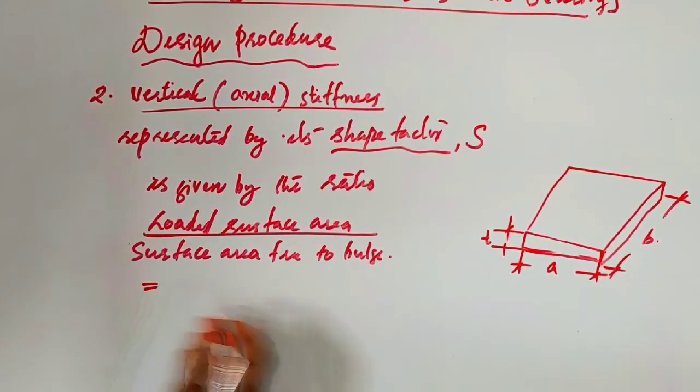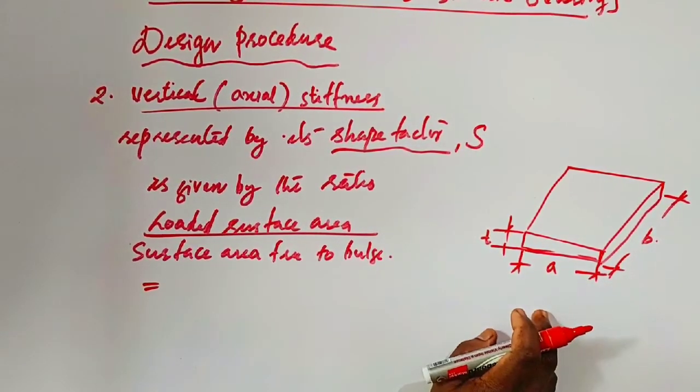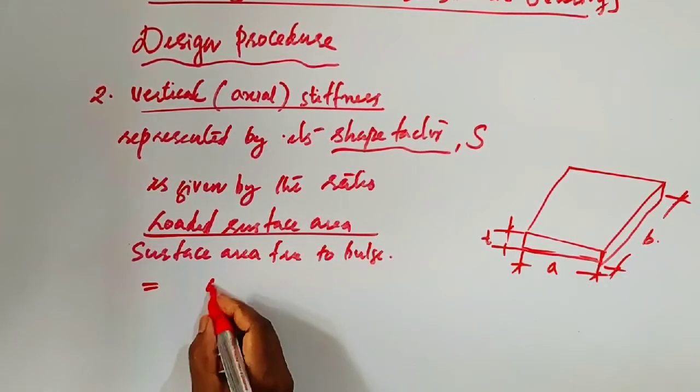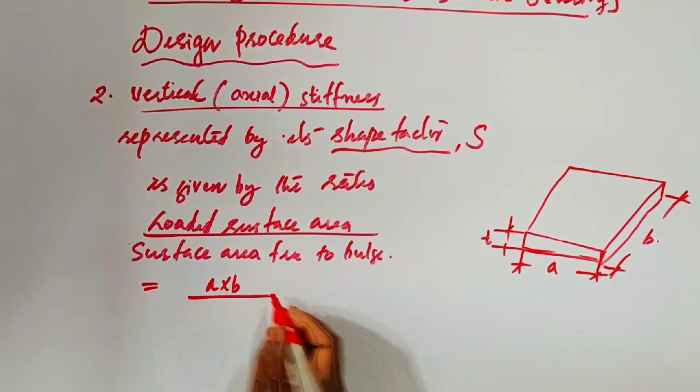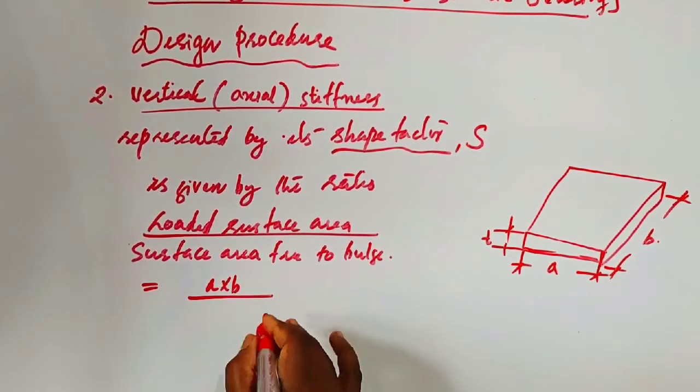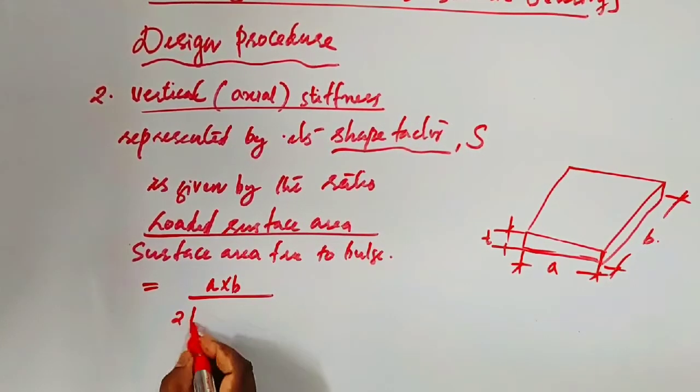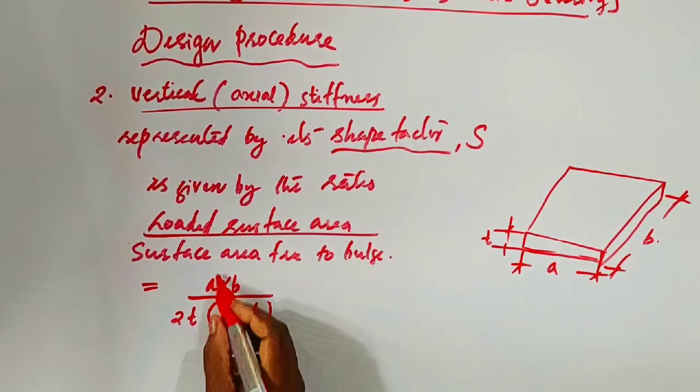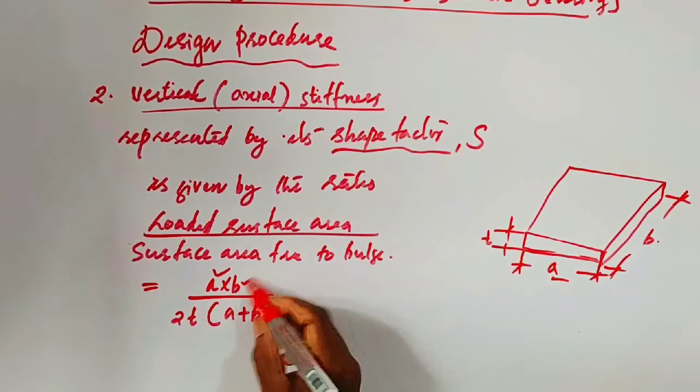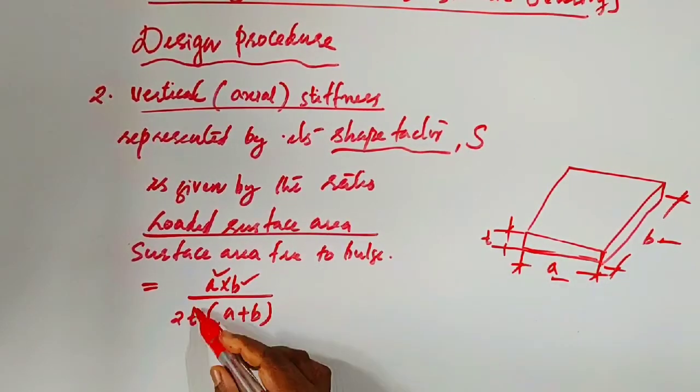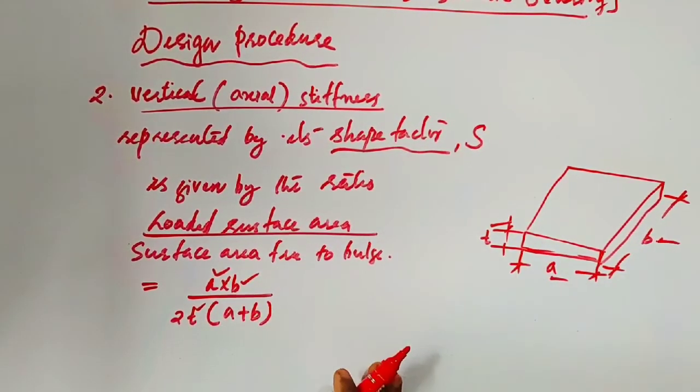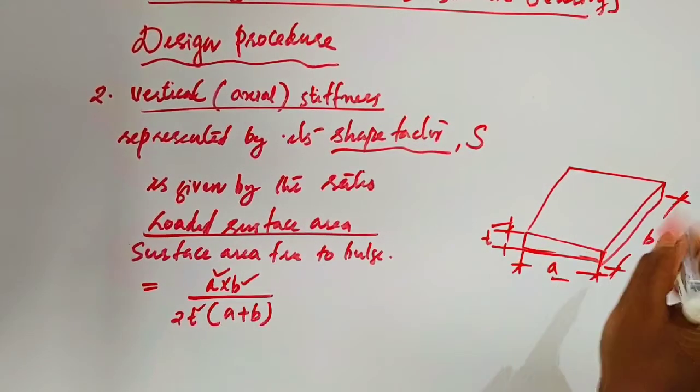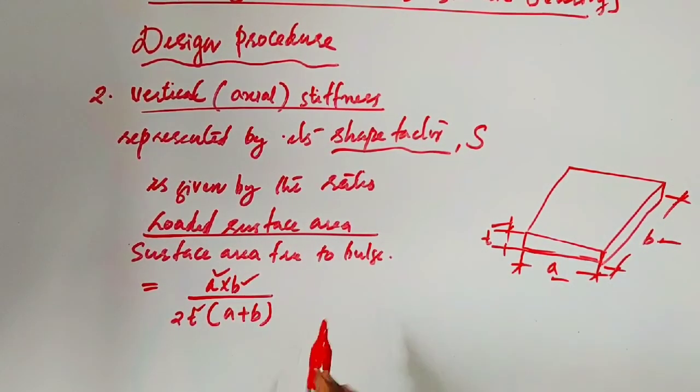Loaded surface area means the plan area, that means A into B of the elastomer, divided by surface area free to bulk. That means 2t into A plus B. Where A and B are the plan dimensions and t is the thickness of the pad.